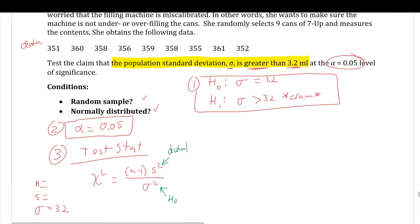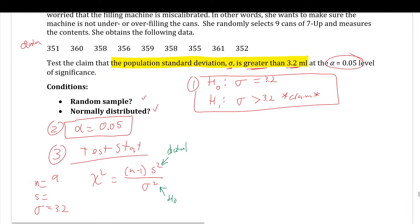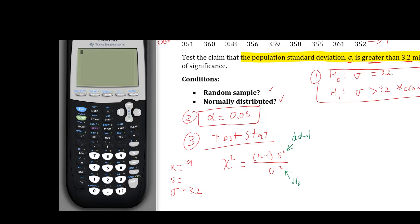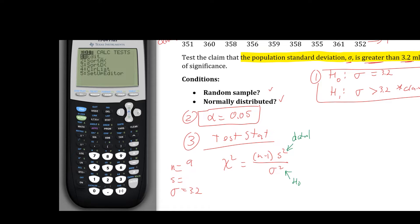To find the sample standard deviation, we enter the data into the calculator. Go to STAT, then Edit, clear the list, and type in the nine data values. Always double-check your inputs. Then go back to STAT, choose one-variable statistics, set the list to L1, and calculate. We're interested in the sample standard deviation s, which comes out to 3.46410.